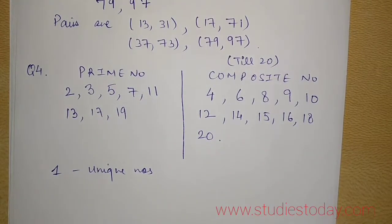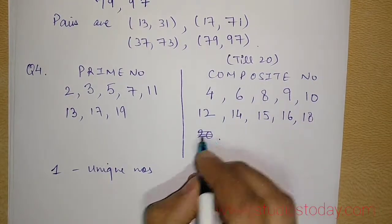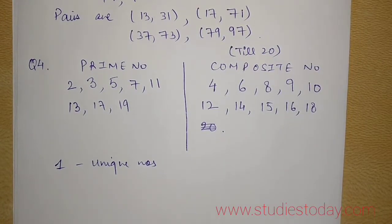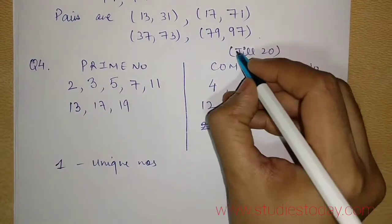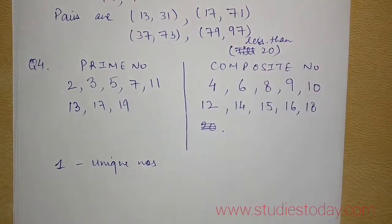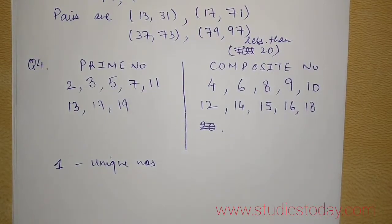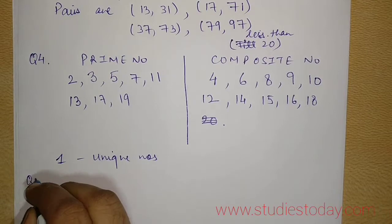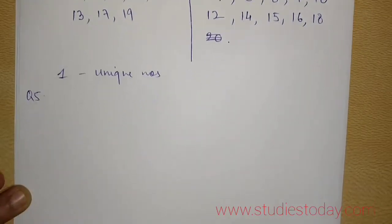It says less than 20, so 20 we will not take. If it says till 20, then we will take 20. So this is not till, this is less than 20. So we will not take 20 into consideration.